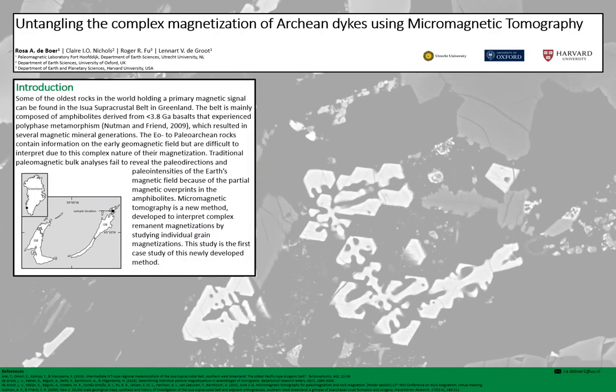The samples for this study were collected in southwestern Greenland and are part of the Isua supracrustal belt, depicted in this figure. The samples are composed of Archean basalts that experienced greenschist to amphibolite facies metamorphism over time.